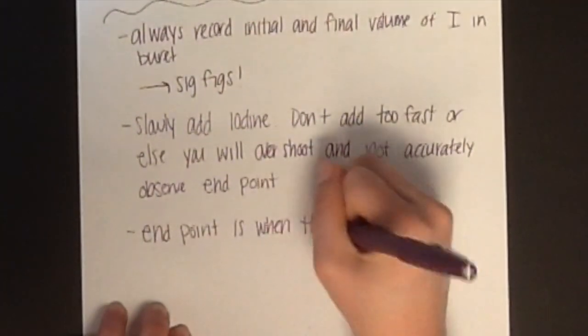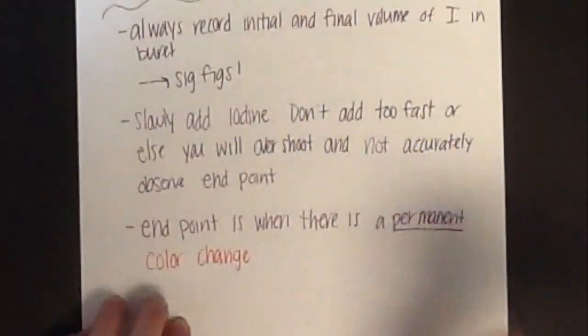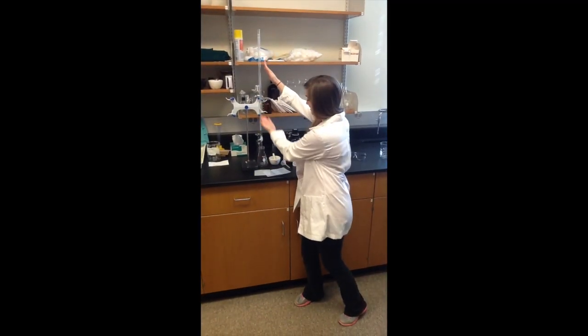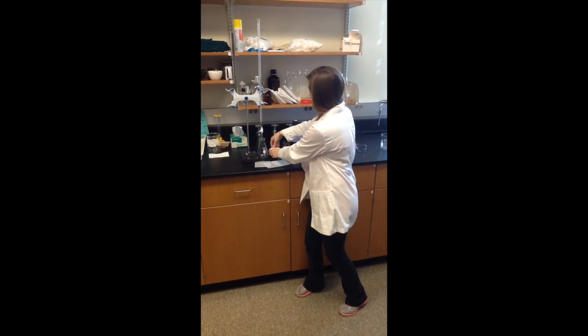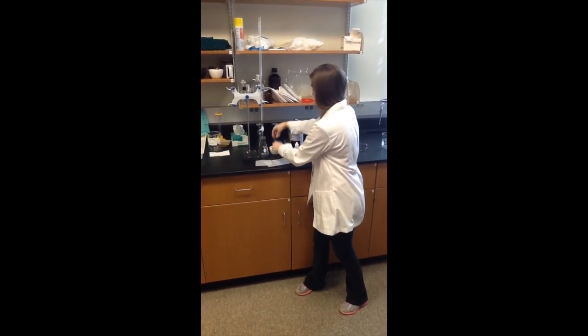3. End point is when there is a permanent color change. 4. For this experiment, you will need your titration setup complete with a 250 mL Erlenmeyer flask and a burette,